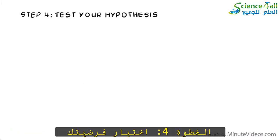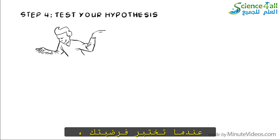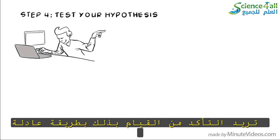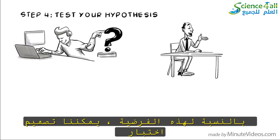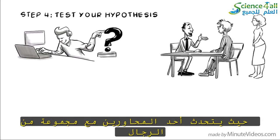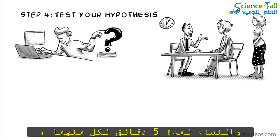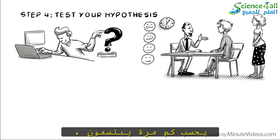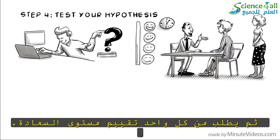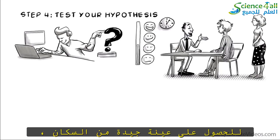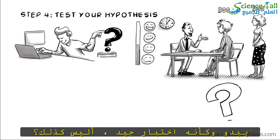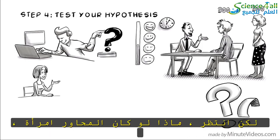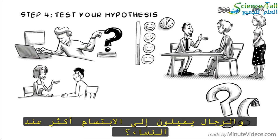Step 4: Test your hypothesis. When you test your hypothesis, you want to make sure to do this in a fair way and that the conditions are constant. For this hypothesis, we can design a test where an interviewer talks with a set of men and women for five minutes each, counts how many times they smile, and then asks each one to rate their level of happiness. To get a good sample of the population, we invite 300 women and 300 men. Seems like a good test, right? But wait — what if the interviewer is a woman, and men tend to smile more at women?